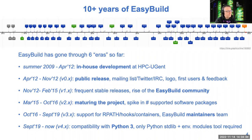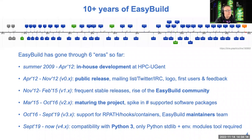We then matured the project and had a big spike in the number of supported software packages. In EasyBuild 3.0 we added support for features like rpath and hooks, which was also the start of the EasyBuild maintainers team. EasyBuild 4.0 was the first version compatible with Python 3, and from then on lots of enhancements and software updates have been added.